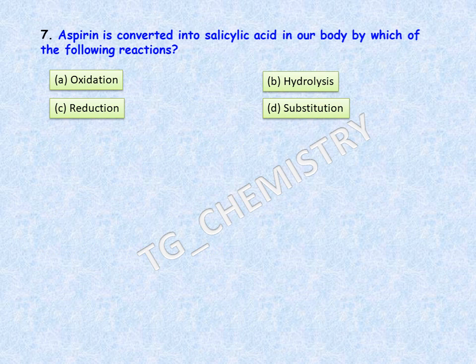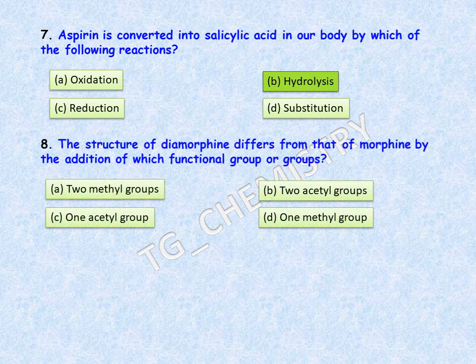Seventh question: aspirin is converted into salicylic acid in our body by which of the following reactions? The correct answer is option B, hydrolysis.